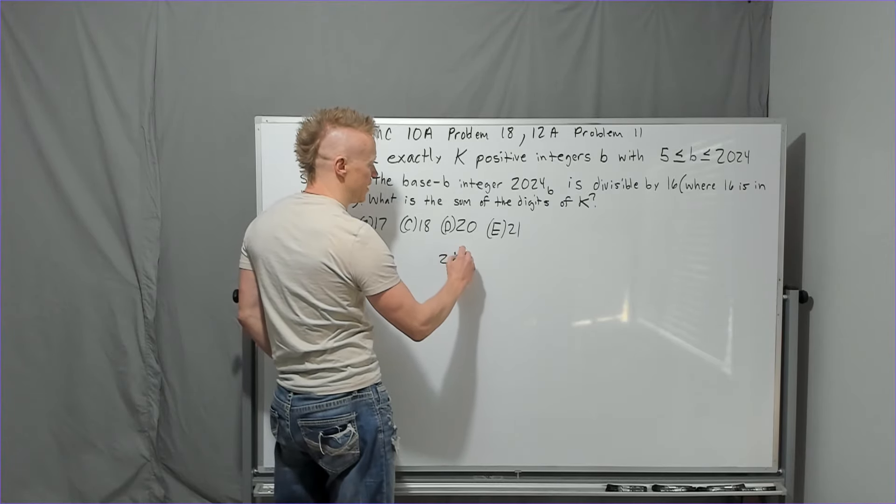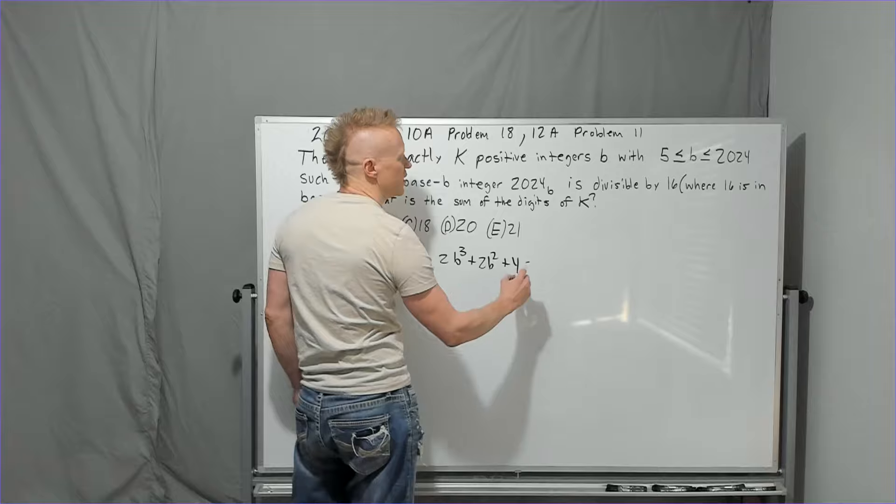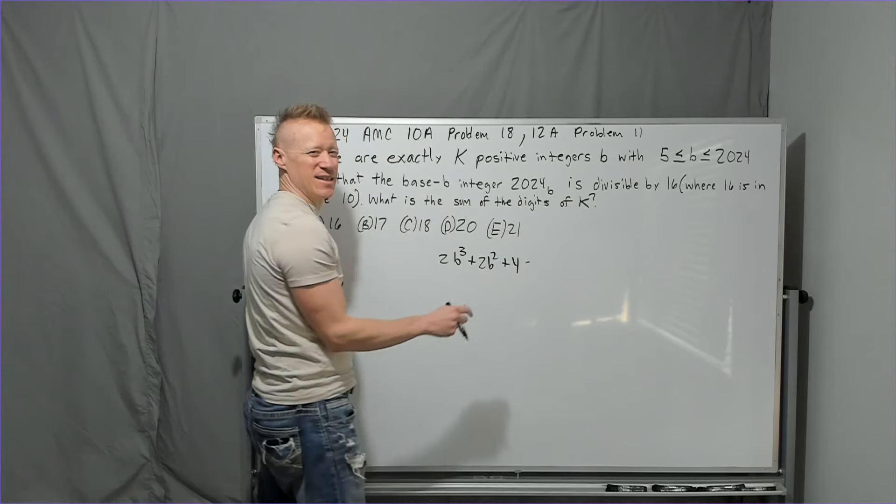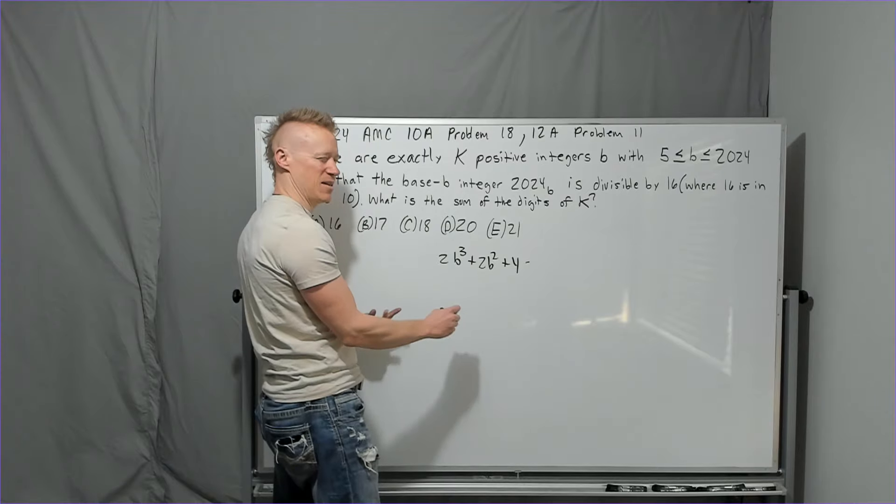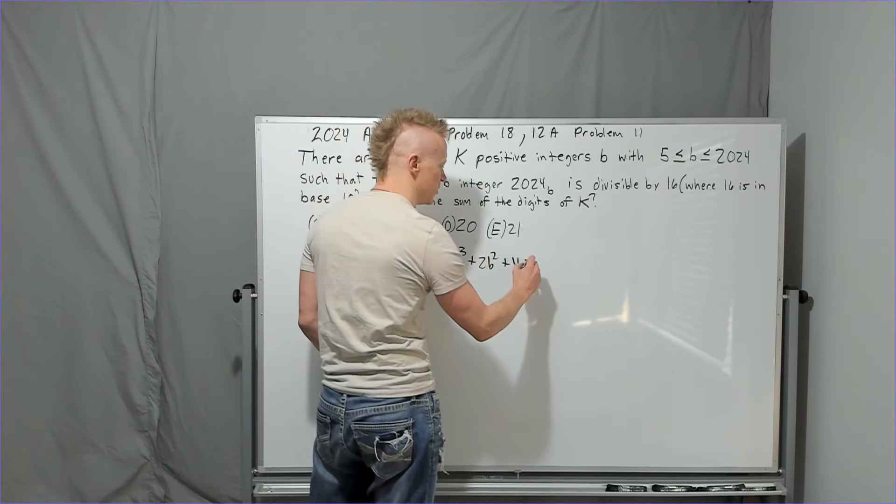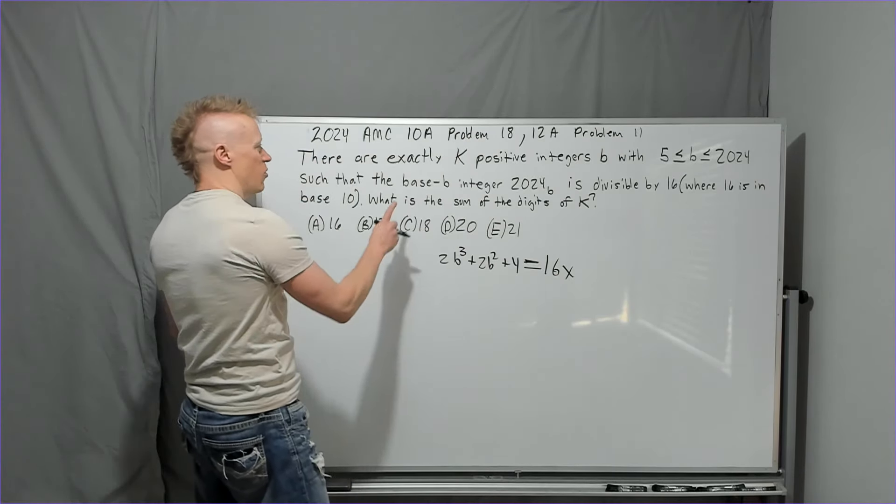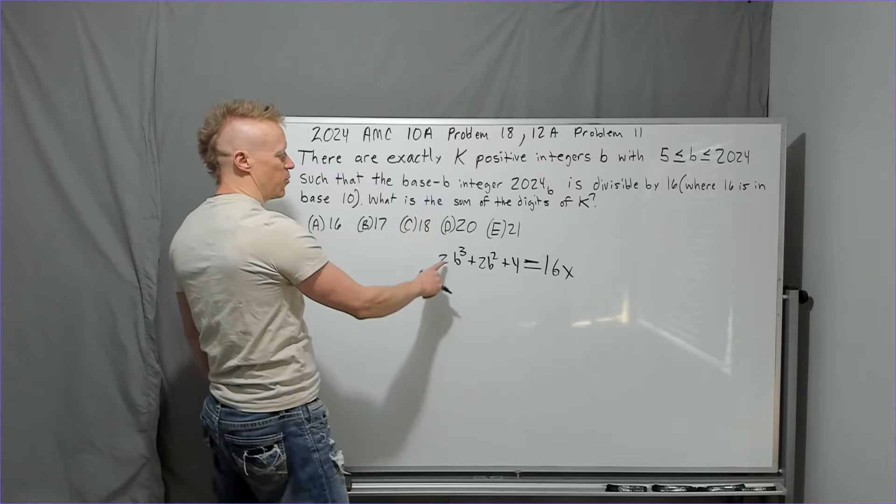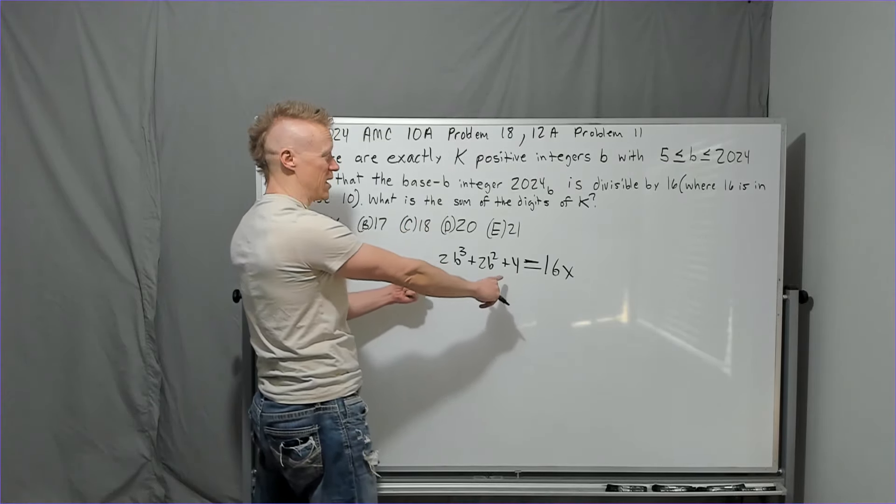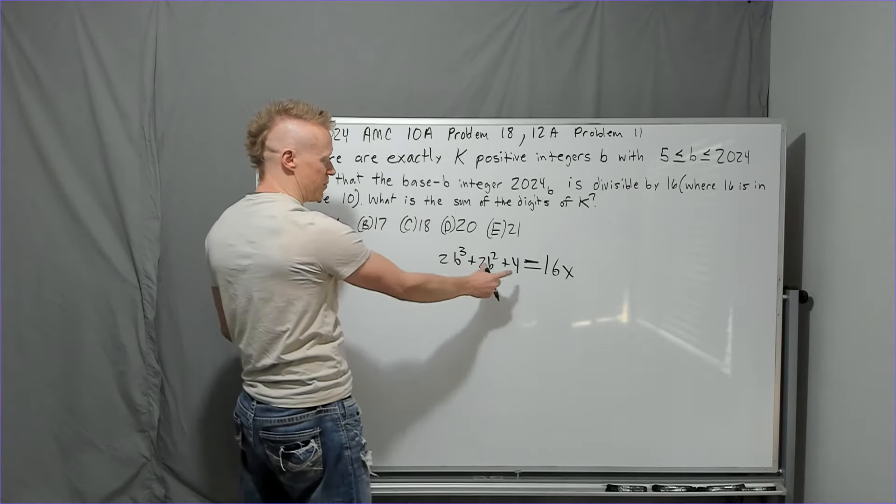It's 2B cubed plus 2B squared plus 4 is divisible by 16. So if I can divide 16 into this, it must equal a multiple of 16. So we'll put equals 16X. Where 16 is in base 10, normal. What is the sum? We have converted this to base 10, by the way, by using the base B to fill in the base work part of it.